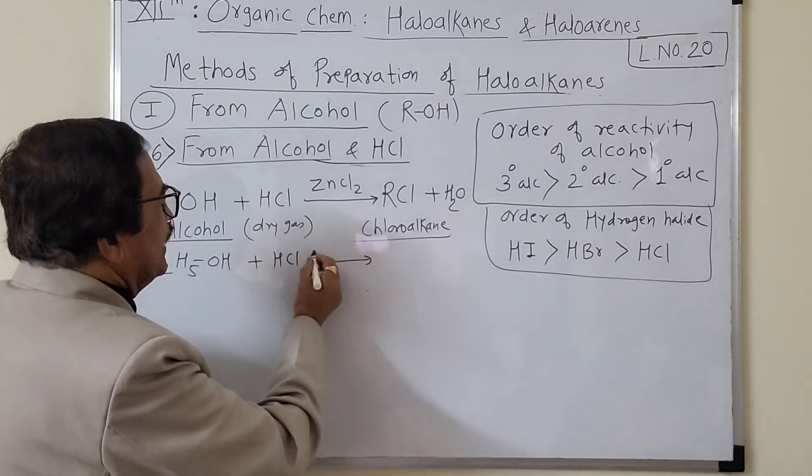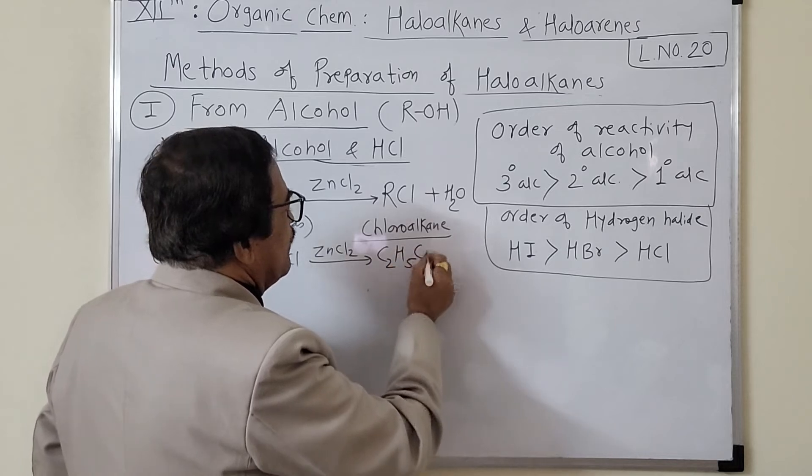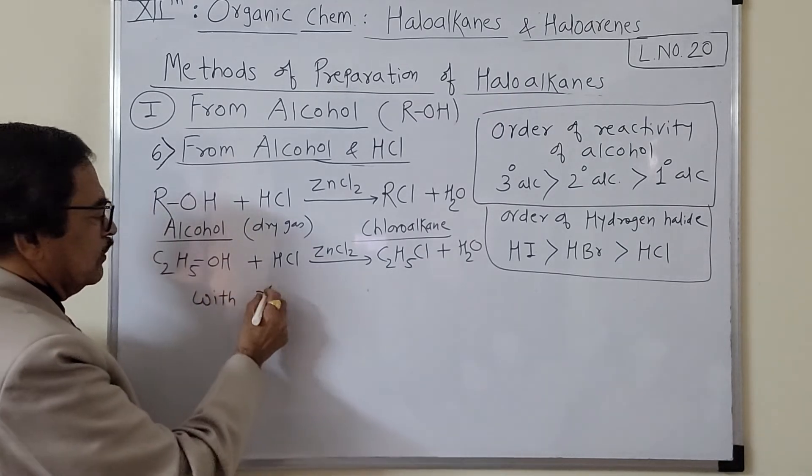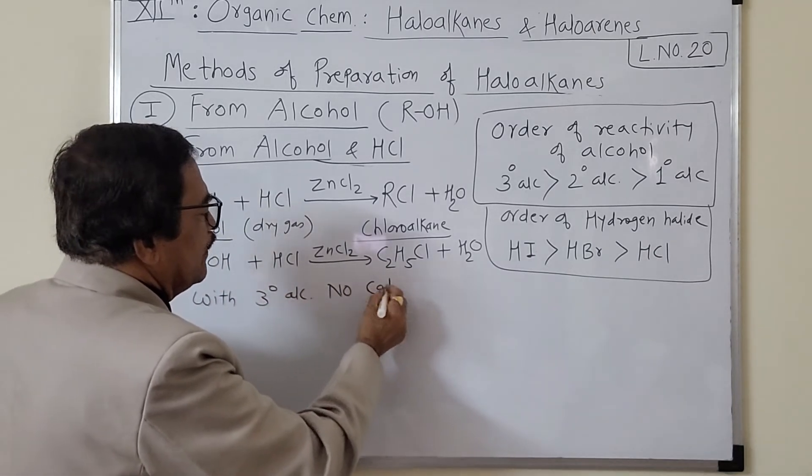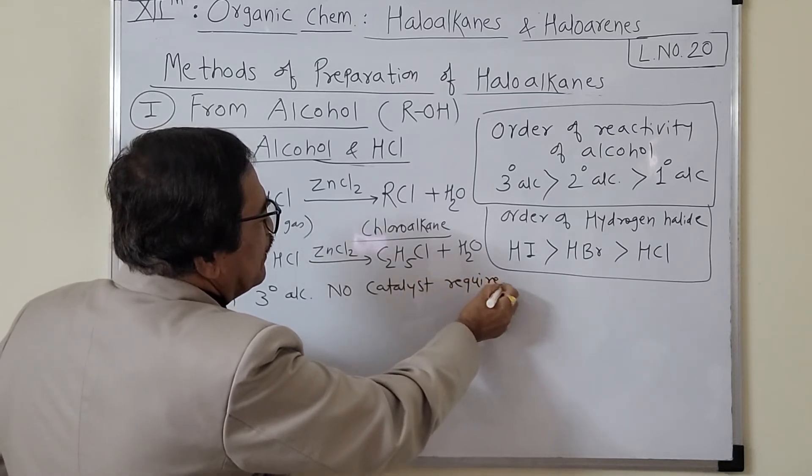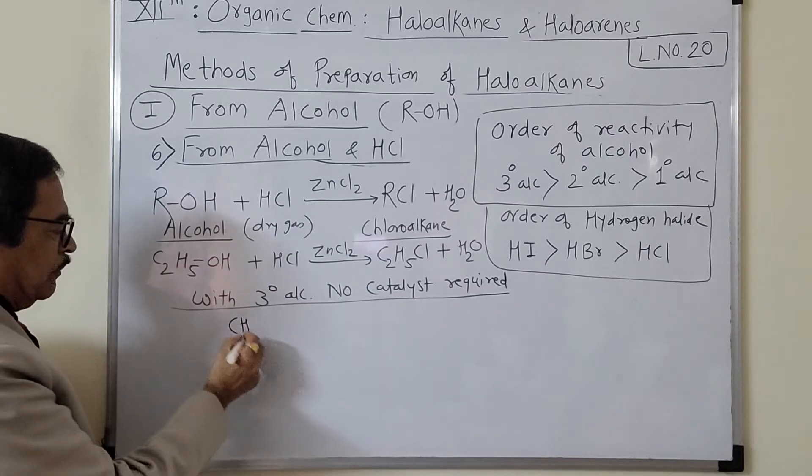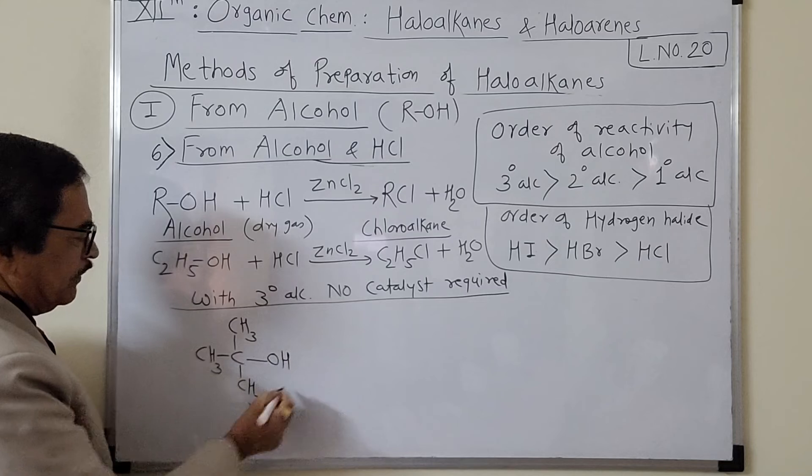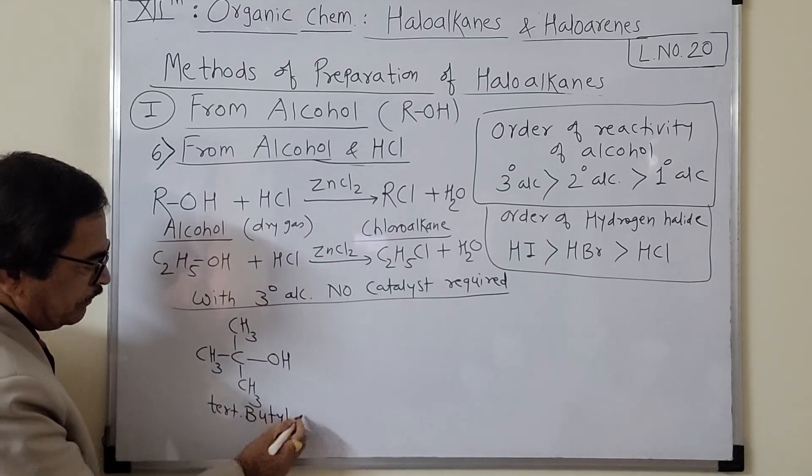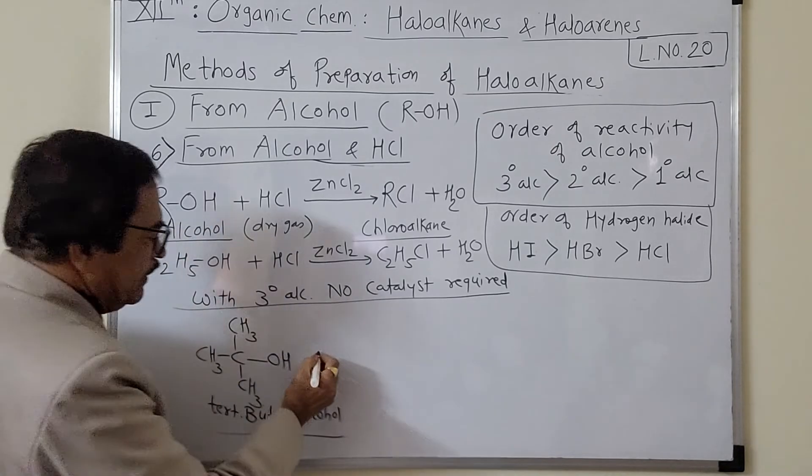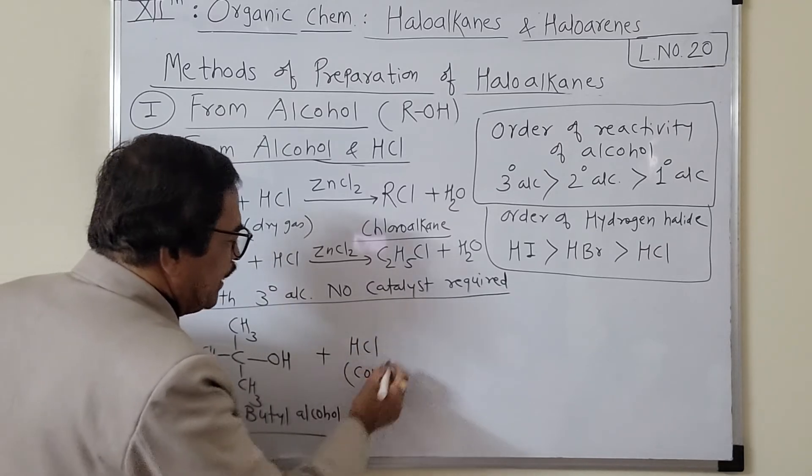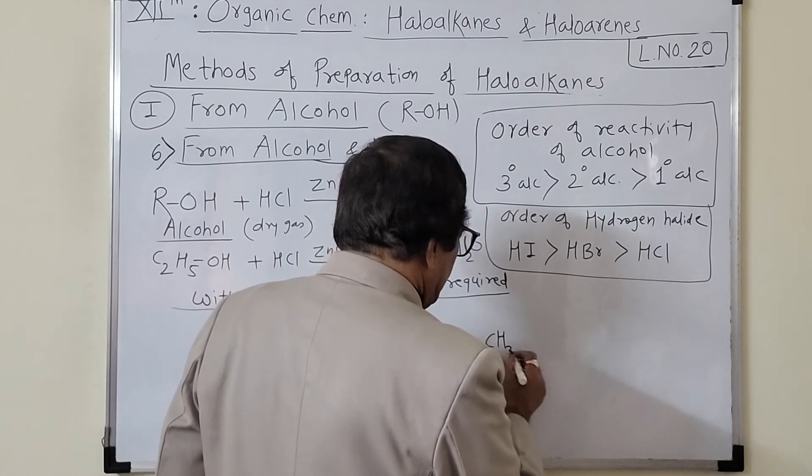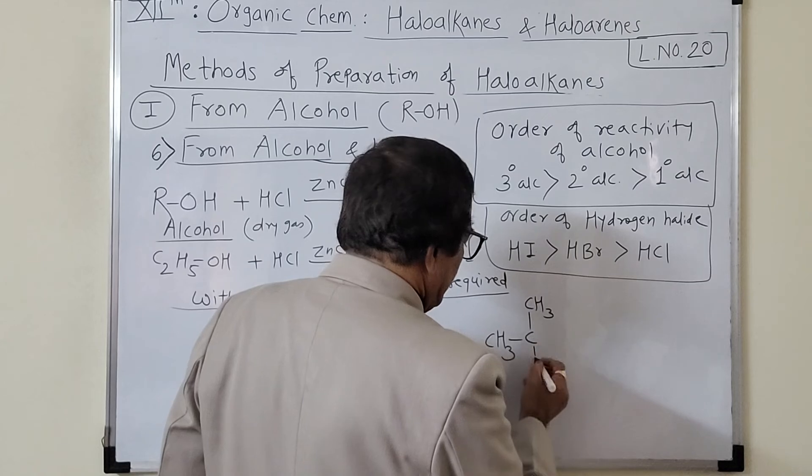With tertiary alcohol, no catalyst required because that is reactive. Point important from MCQ point of view: suppose I take this CH3-C(CH3)(CH3)-OH, this is called tertiary butyl alcohol. And when it is reacted with concentrated HCl, just shaken at room temperature also, reaction occurs. Then what will happen? We will get CH3-C(CH3)(CH3)-Cl.